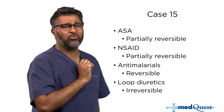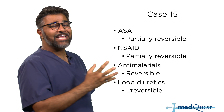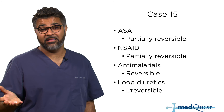Loop diuretics — such as furosemide (Lasix) — cause irreversible hearing loss. So you might be dry and urinating frequently, but you can't hear yourself doing it.